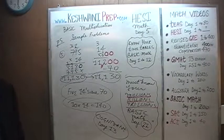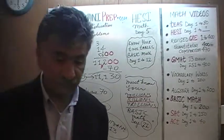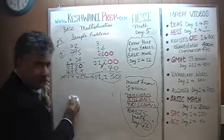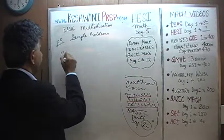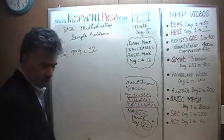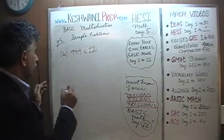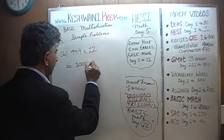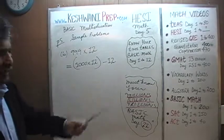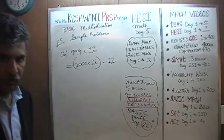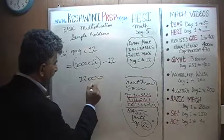The very last problem is number 6: 999 times 12. There are 4 more in the book but we won't do them all in this video. This one is very easy: 999 times 12 is the same as 1,000 times 12 minus 12. A thousand times 12 is 12,000, so subtract 12 from that.